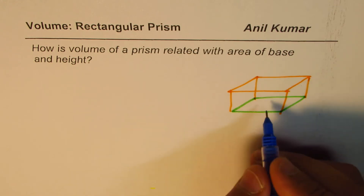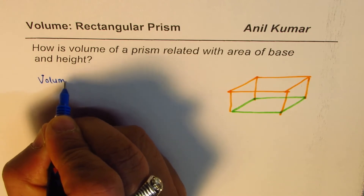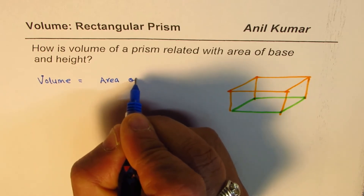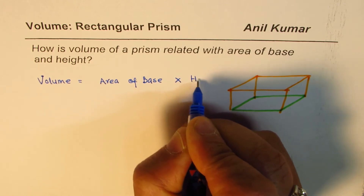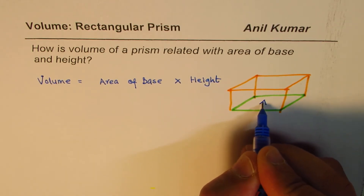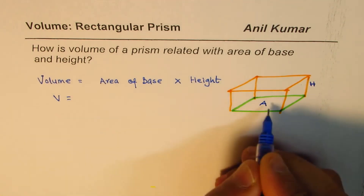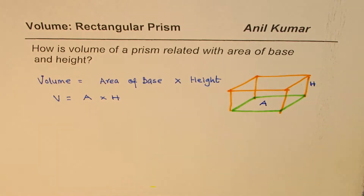So that's the rectangular prism. How do you find the volume or capacity of this prism? The relation is: volume equals area of base times height. So if A is the area of the base and H is the height, then volume equals area times height. That is how volume is related to area and height.